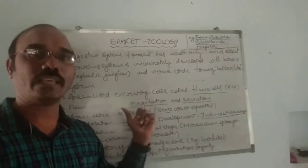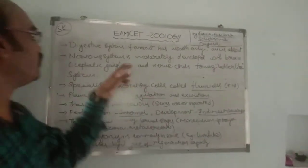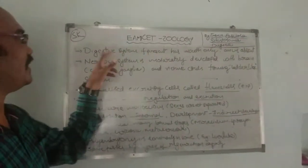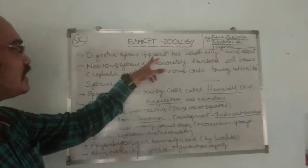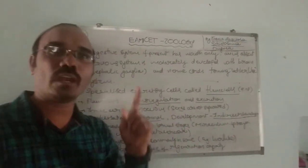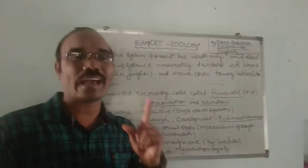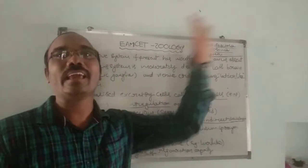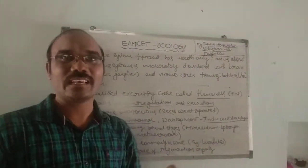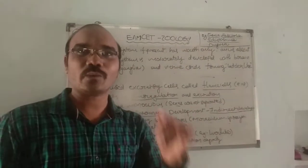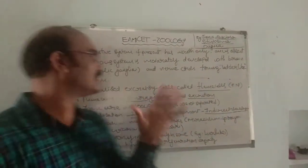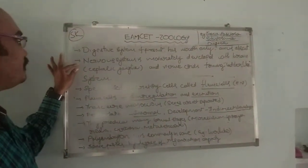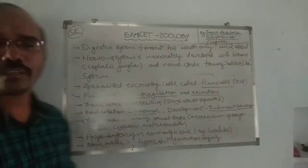Coming to the digestive system of these organisms: if present, the digestive system has only one mouth. They do not have any separate anus — the mouth also acts like an anus.